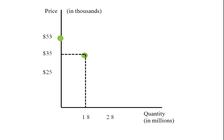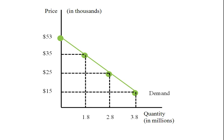We'll do the same for $25,000 and 2.8 million cars, and $15,000 and 3.8 million cars. I'll take all of those points and connect them, and that becomes my demand curve. The demand curve traces out the relationship between different prices and their corresponding quantity demanded.